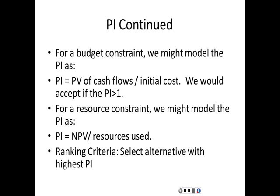When we have a budget constraint, we take the present value of the benefits — years one through n — and divide by the initial cost. Notice when we do this, the initial cost is put in as a positive. We would accept if the PI is greater than one, meaning the value in today's dollars exceeds the cost today. We rank projects from high to low and select the project with the highest PI.